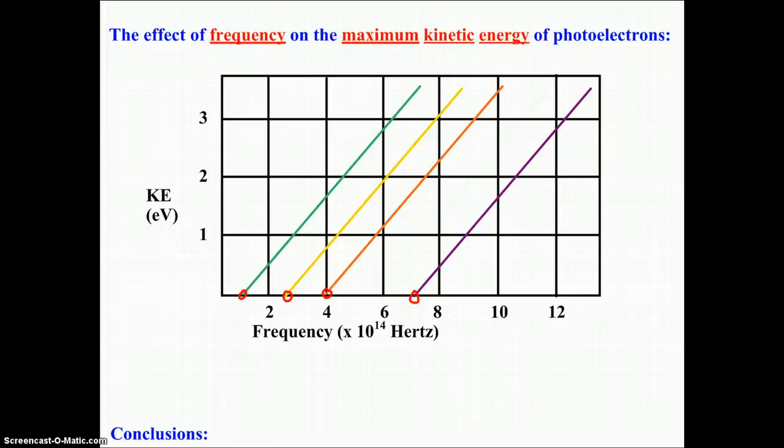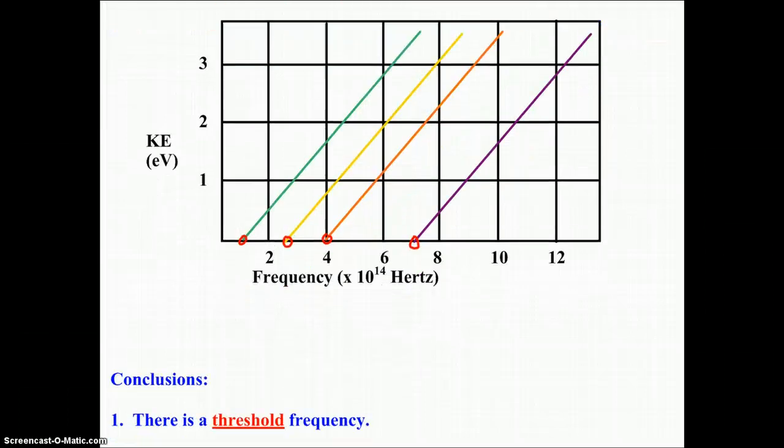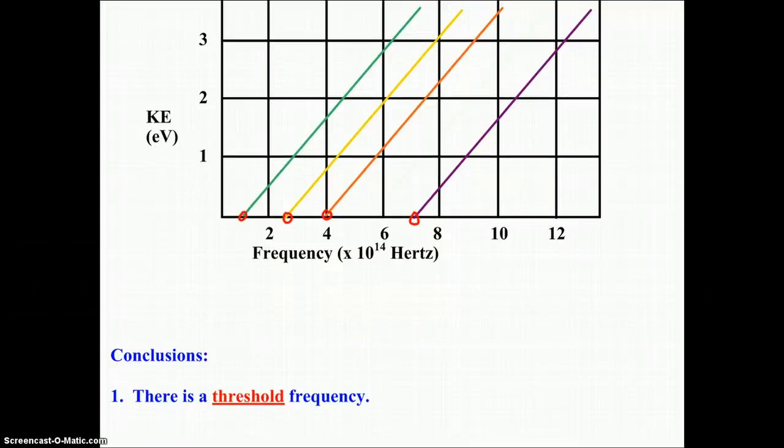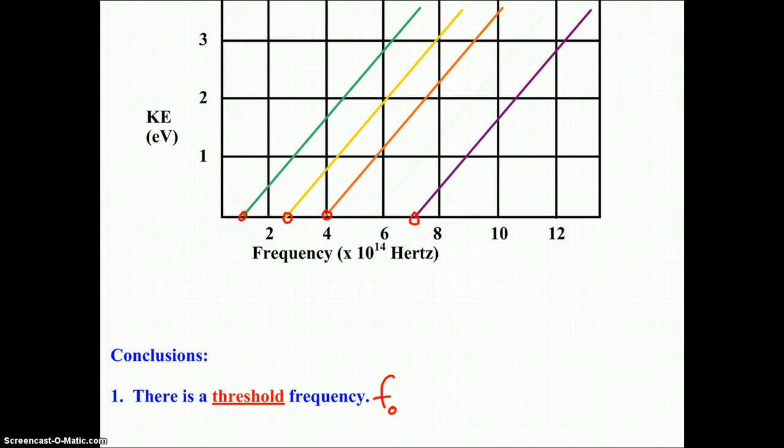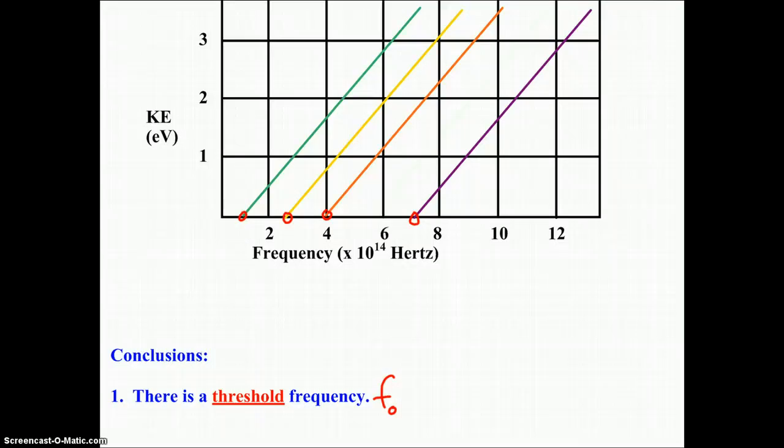So what were some of the conclusions that Planck drew from his work? The first, which we've just been stating, is that there is what is called a threshold frequency, given the symbol F with a subscript O or F0. So the threshold frequency is the x-intercept at which photoelectrons just start to be emitted, and each metal has its own unique threshold frequency.